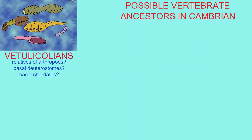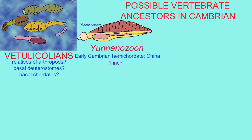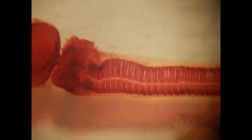In addition to the odd vetulicolians, whose phylogenetic position is not quite determined, there is debate as to whether they were relatives of arthropods — an early idea — or basal deuterostomes, or basal chordates. Some have interpreted the fossils as possessing pharyngeal slits, which would be significant for vertebrates.